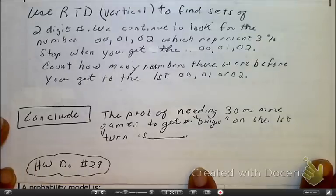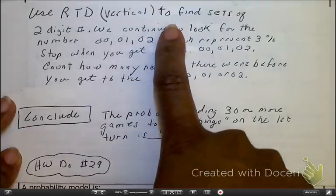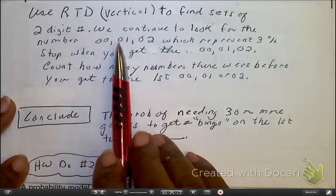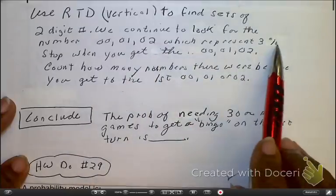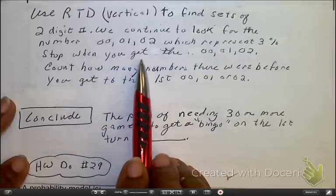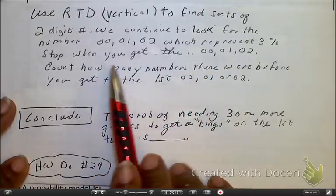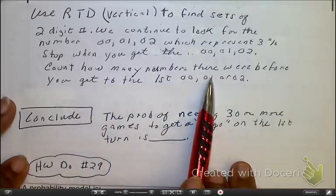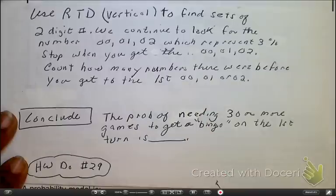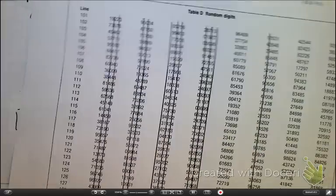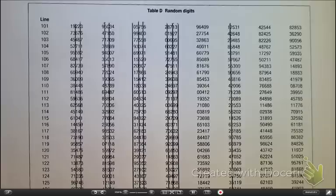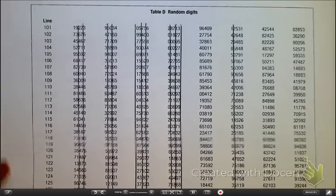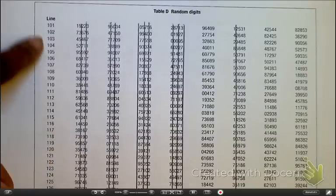Next, here I'm going to use the random digit table. I'm going to use it vertically to find the set of all two-digit numbers. And we're going to continue to look for it until we see the numbers 0-0, 0-1, and 0-2. And we know that that represents 3%. I'm going to stop when I get 0-0, 0-1, and 0-2, and then I'm going to count how many times it took for us to get there. Let's look at this random digit table.